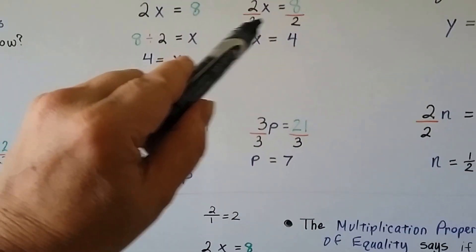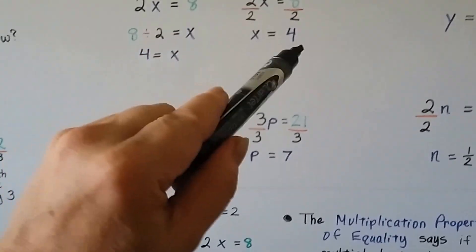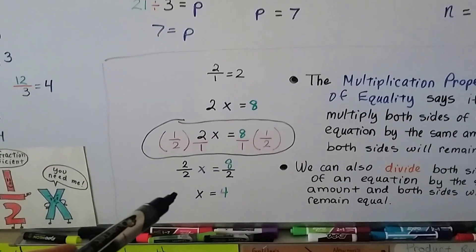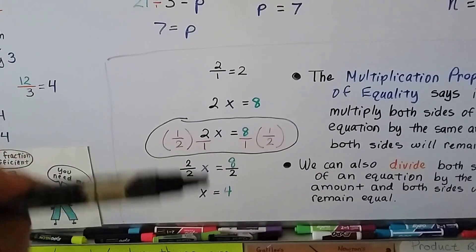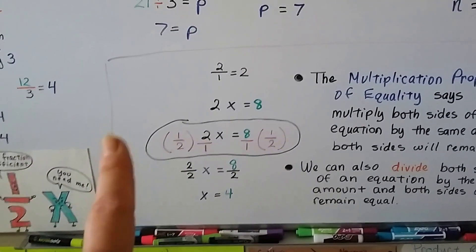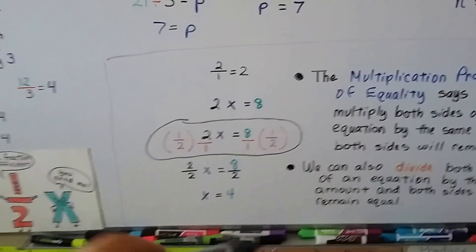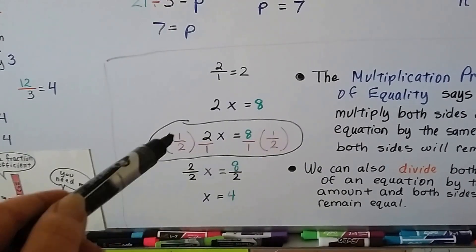See? That's what we did here. We just divide both sides by that 2. We're going to get a 4. It's the same thing. We're just going quicker by using the division. See? Now what's really important is sometimes you do want to multiply by the reciprocal.